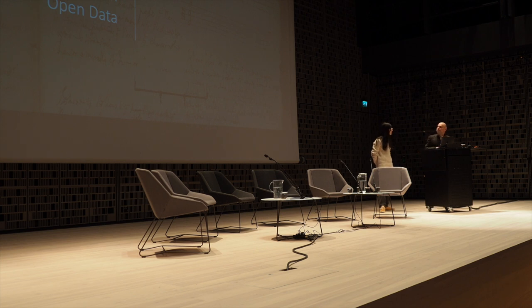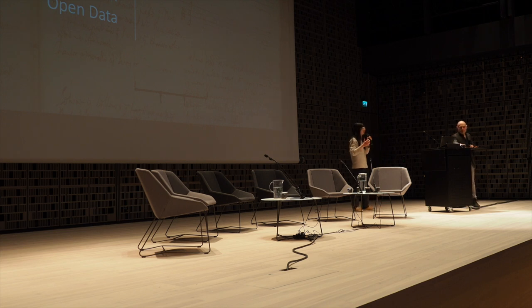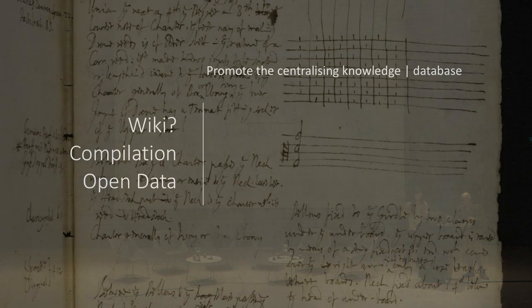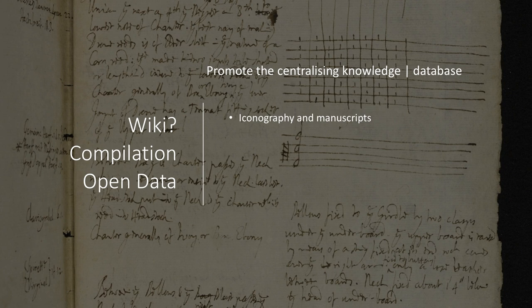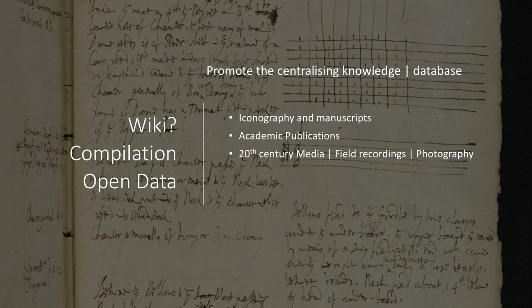We discussed a possible way or technology of organising the data. We have to think about doing a wiki-like structure for all the data, all the knowledge we want to share. This will include iconography and manuscripts — like first-hand materials — and also modern research, like things people publish online or that have never been digitalized. We can scan them to bring them together.